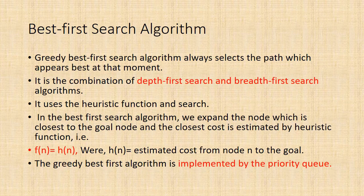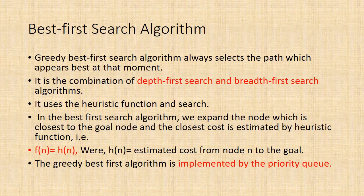Best-first search is a general approach of informed search. It is the combination of depth-first search and breadth-first search algorithms. It uses the heuristic function and search. Best-first search allows us to take the advantages of both algorithms. With the help of best-first search, at each step, we can choose the most promising node.